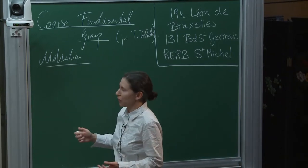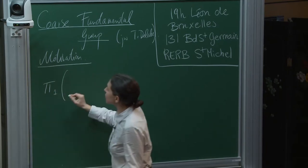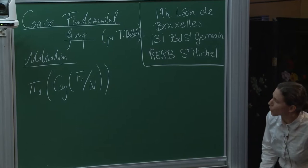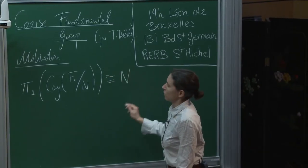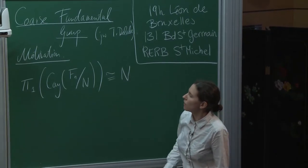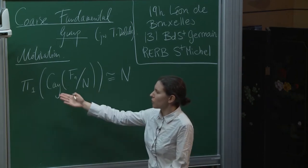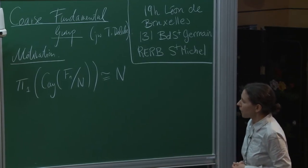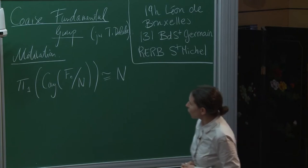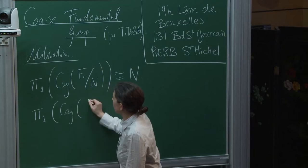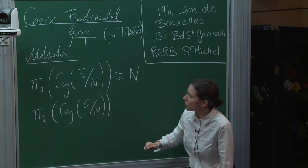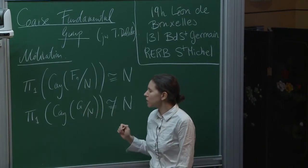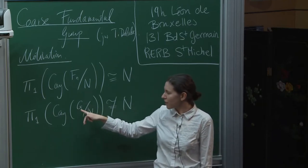Imagine if our group was free. If I look at the fundamental group of a Cayley graph of a quotient of a free group by some normal subgroup N, then exactly what I'll get is the subgroup N. For the case of free groups, I have this very nice way of detecting the subgroup by looking at the fundamental group — the fundamental group is the loops in your space, and here we've made exactly the elements of N into loops.